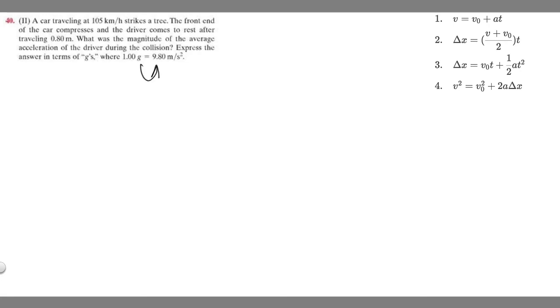Let's find out what variables we're given and write them down first. The car is traveling 105 kilometers per hour, so our initial velocity v0 is 105 km/h. The front end compresses and the driver comes to rest after traveling 0.8 meters, so delta x equals 0.8 meters. The change in position is 0.8 meters, and we're trying to find the acceleration.